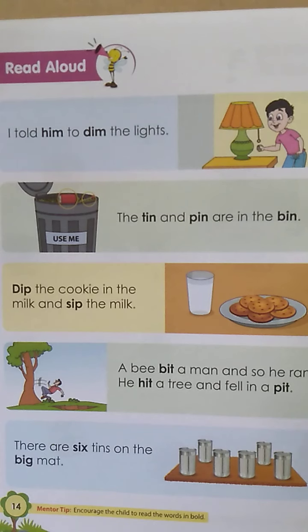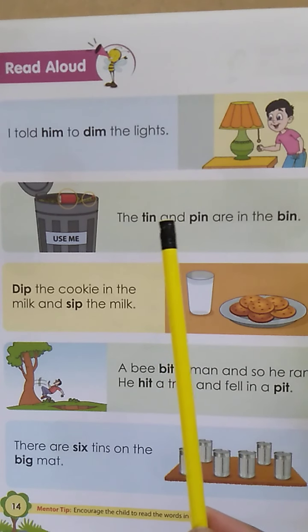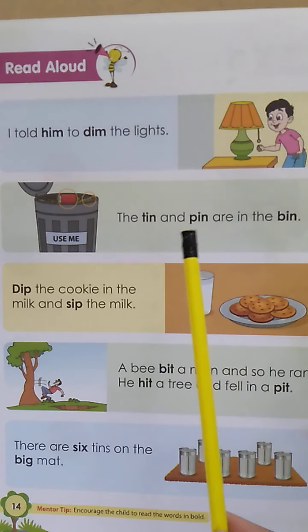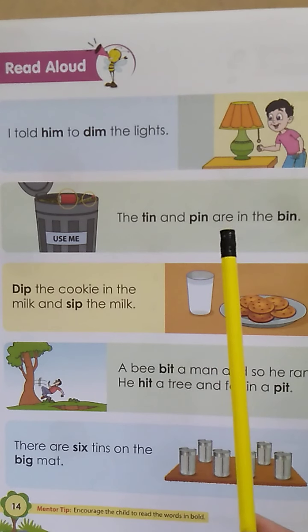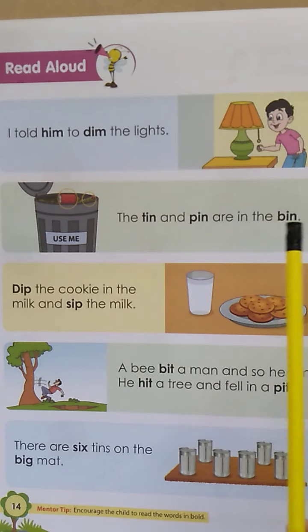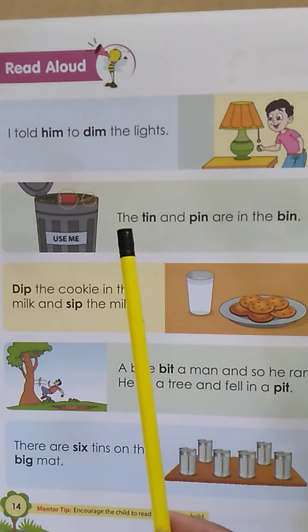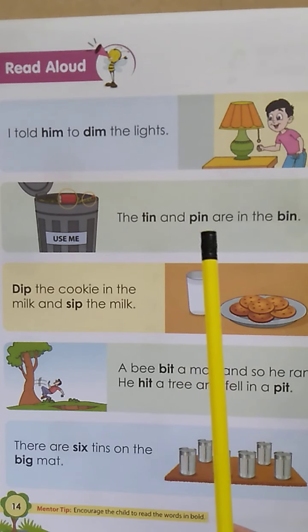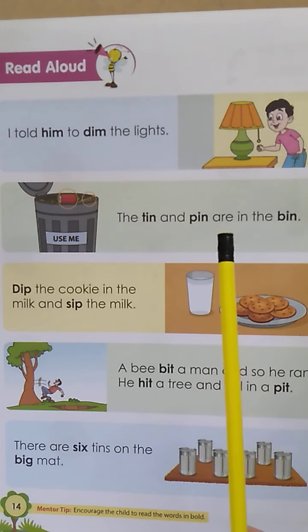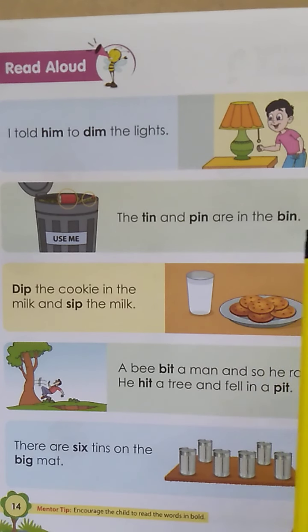Now shall we read the next sentence? The tin and pin are in the bin. The tin and pin are in the bin.